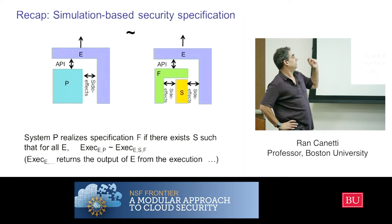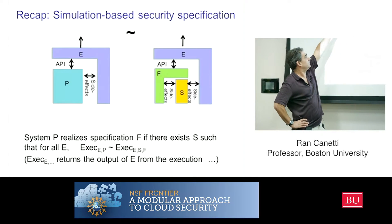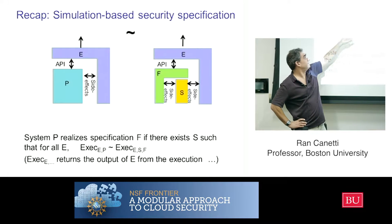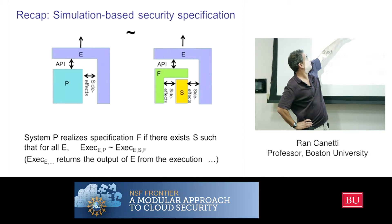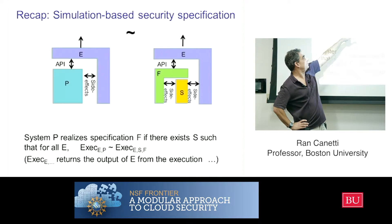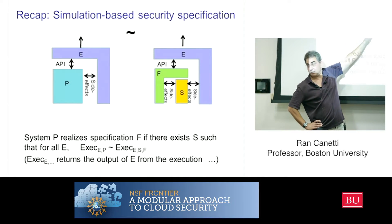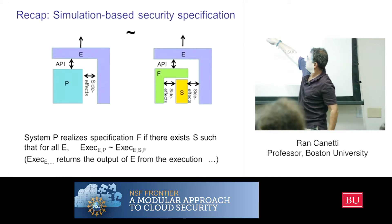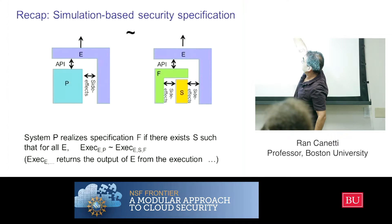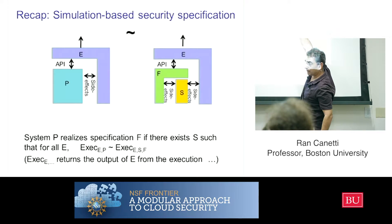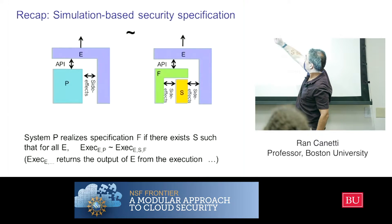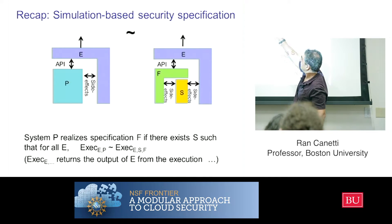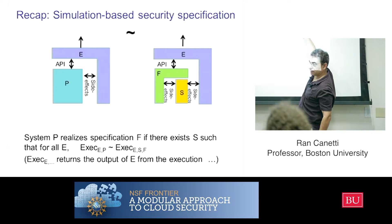Here's a picture I tried to draw. This is the environment, and it interacts with my system P — that's all the interactions. I split them into the APIs that I want to preserve, and all the side effects that I don't care about. And now I'm looking at the specification of the ideal service F. This service F is also going to have an API interface and side effects. And I'm allowing the simulator — this fudge factor — to be the translator between the side effects that the ideal service gives and the side effects that the environment sees.